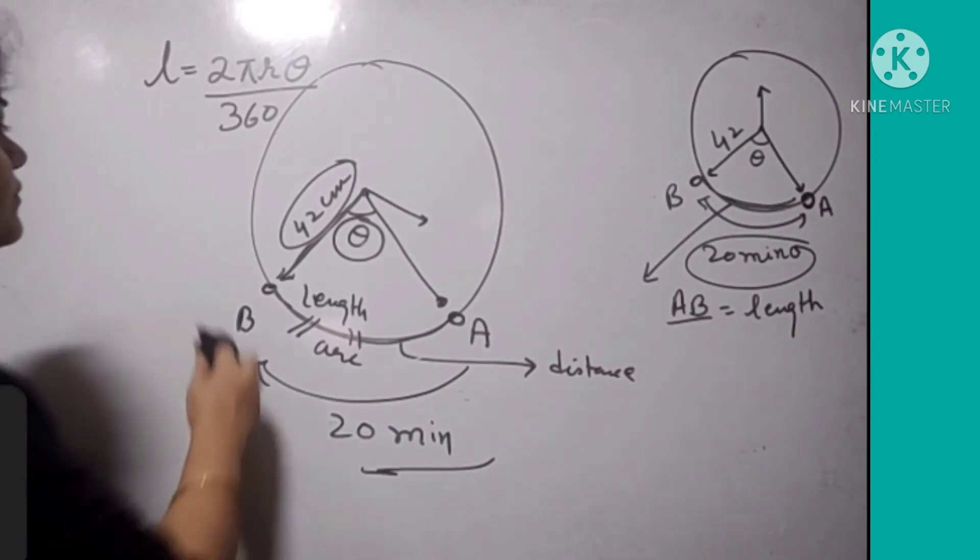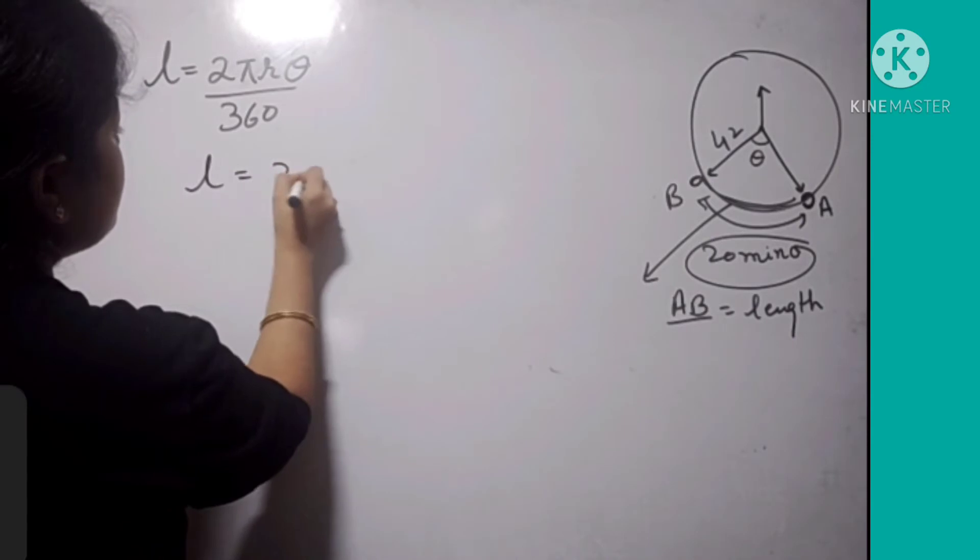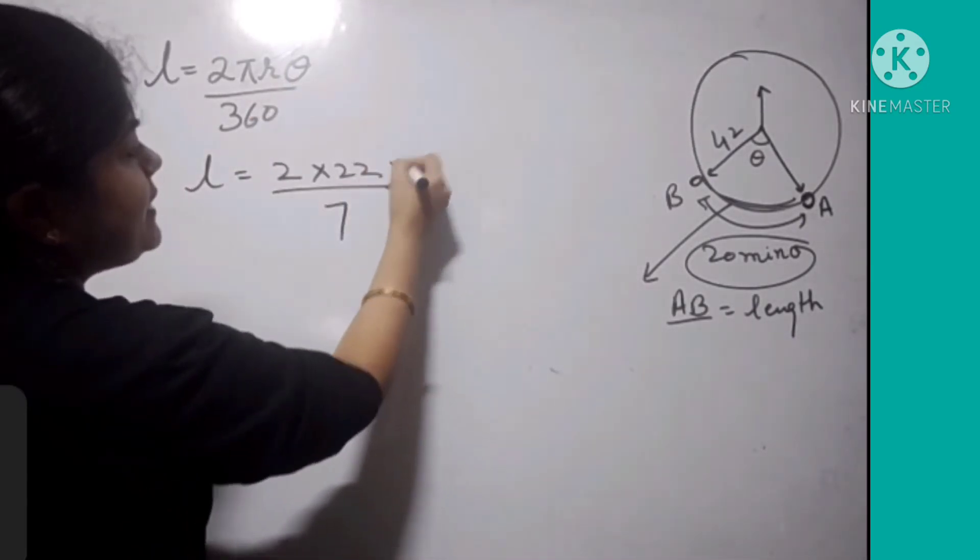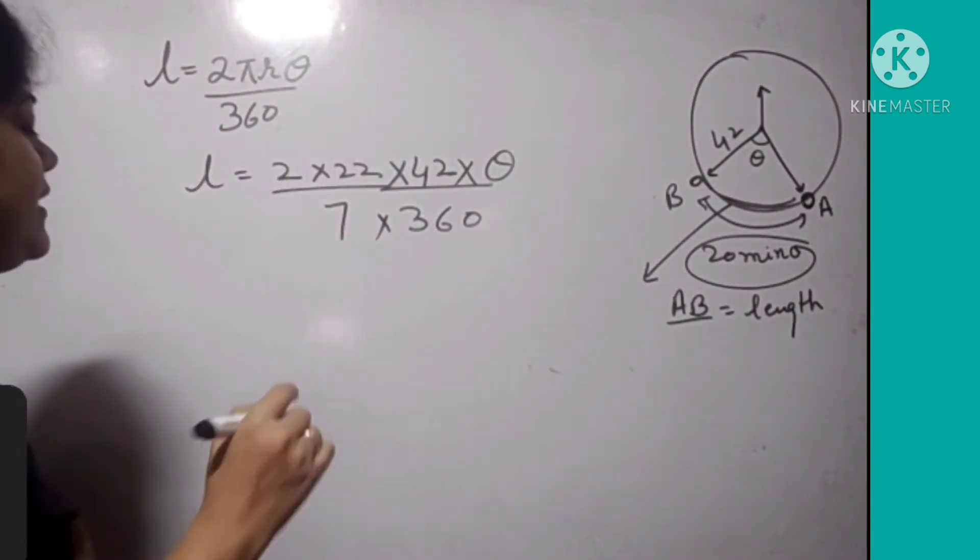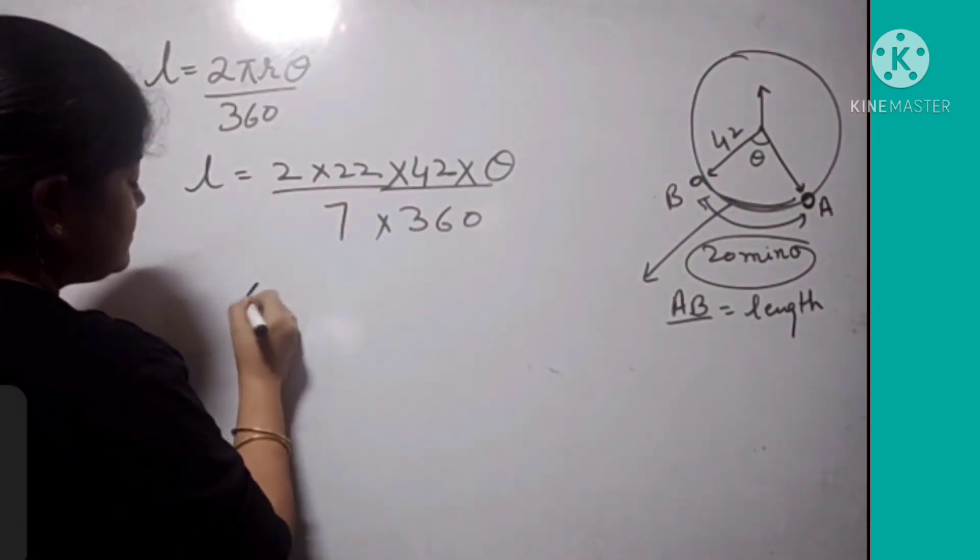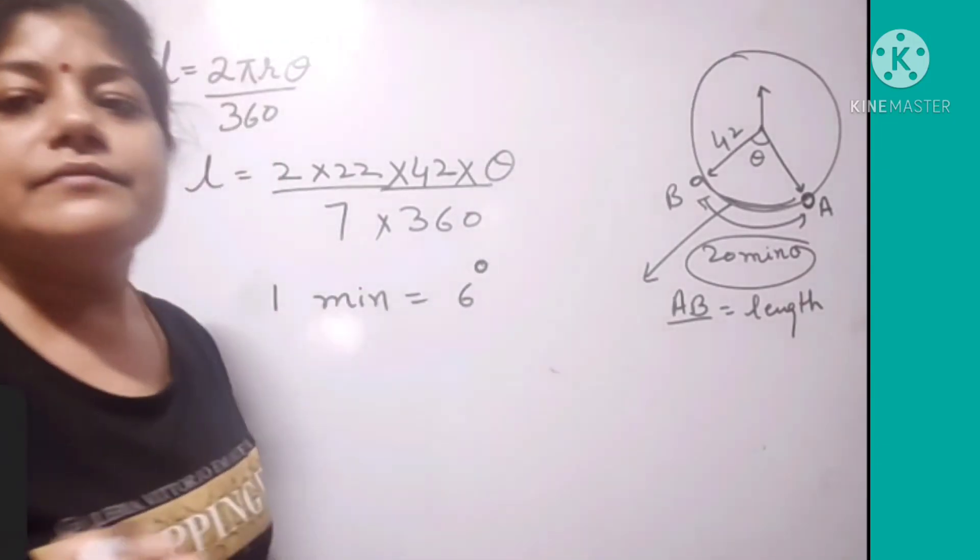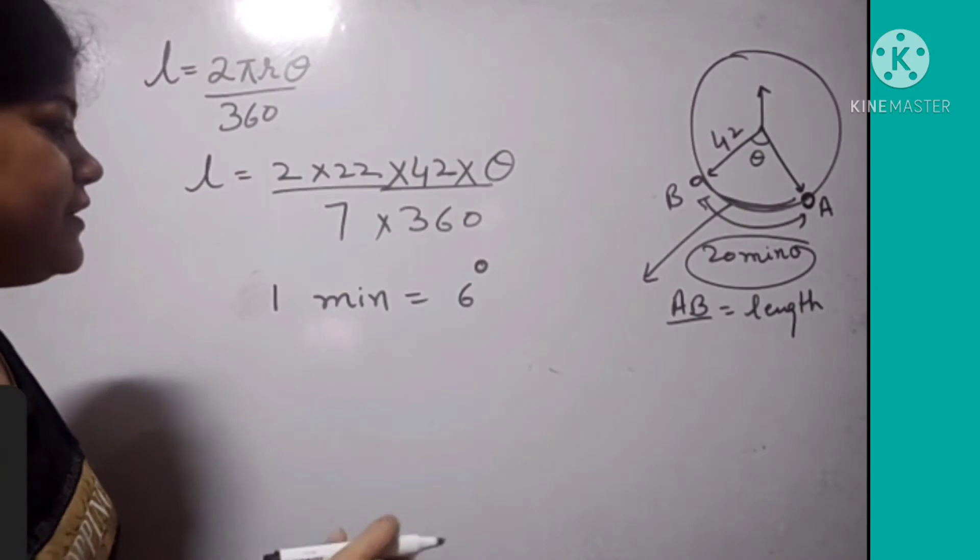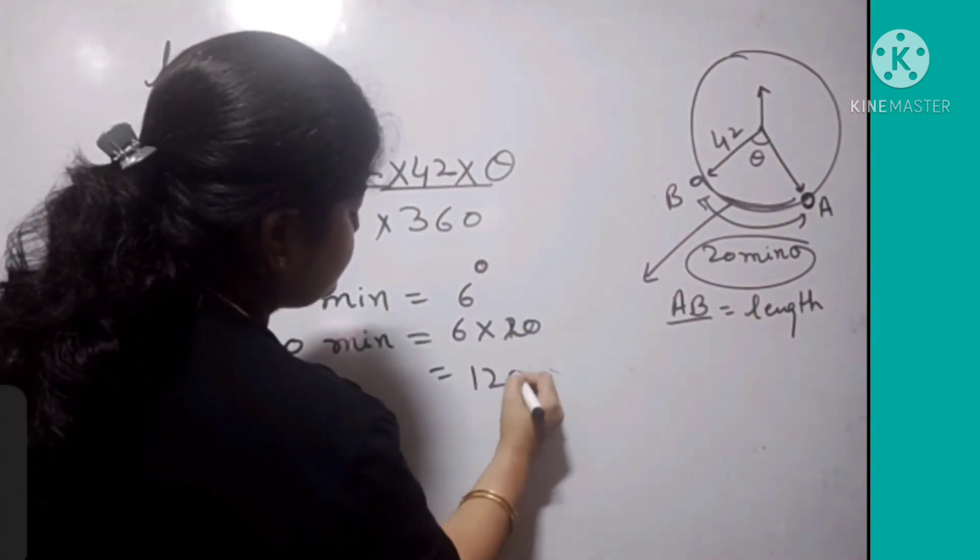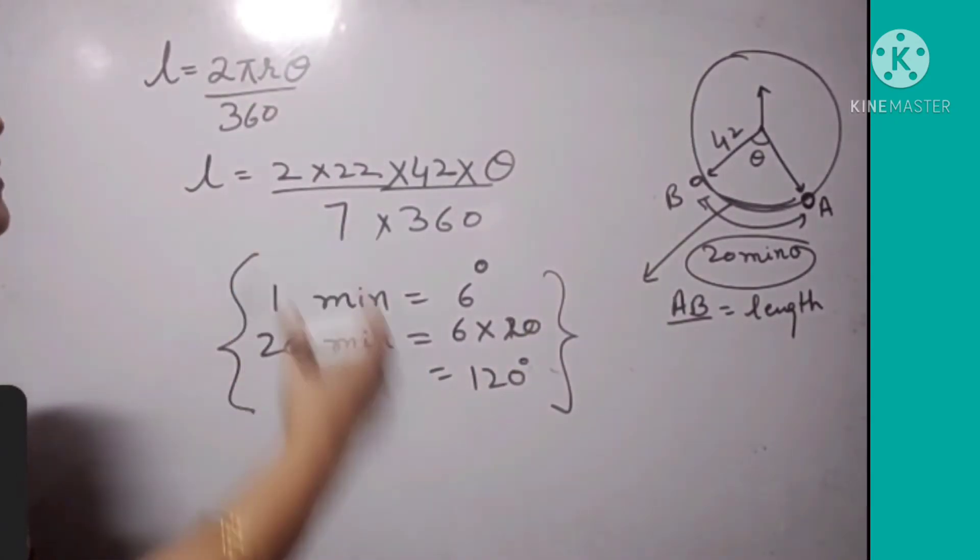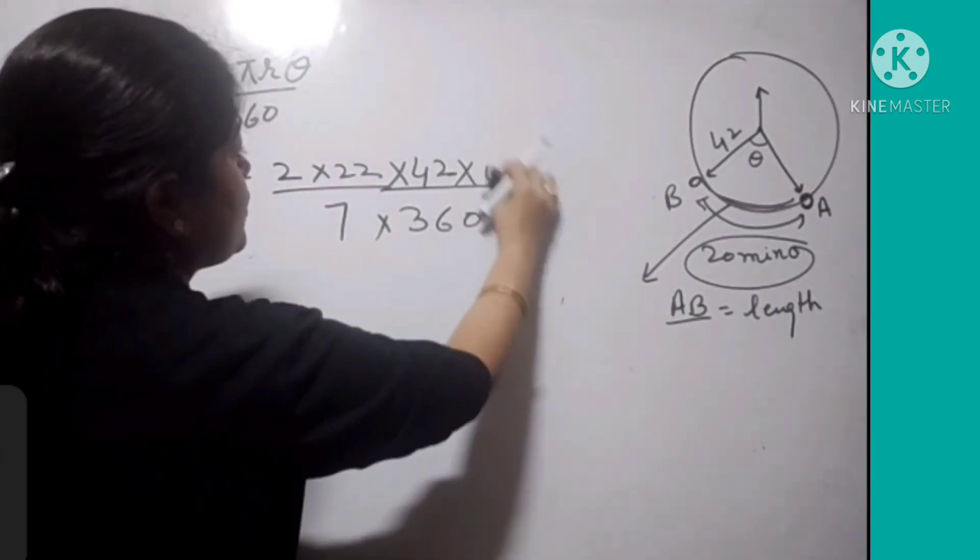Now let's see how we can solve it. The radius of the minute hand is 42 cm. Now we have to see the theta. In 1 minute, the minute hand covers 6 degrees. So in 20 minutes, what is the angle? It is 120 degrees. This concept is very important in order to solve questions based on clocks. Now we put 120 in place of theta.